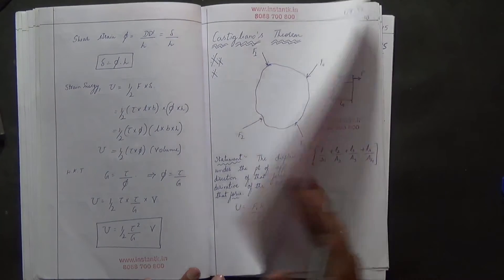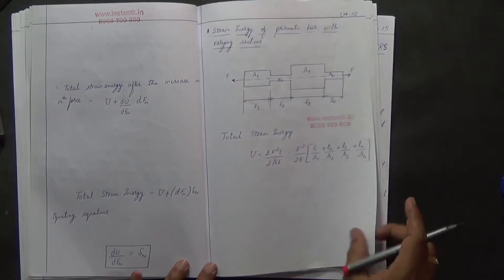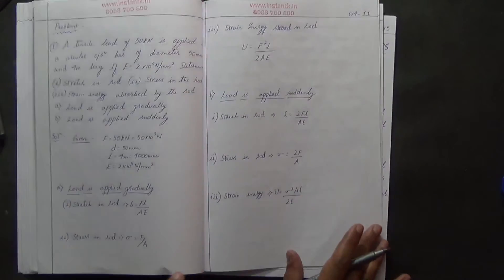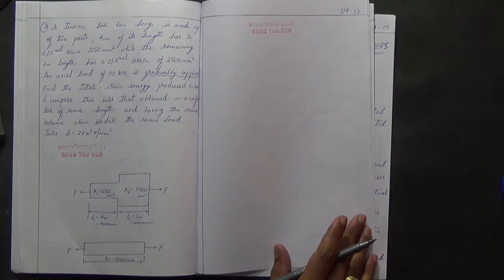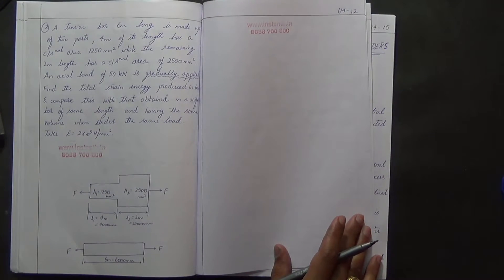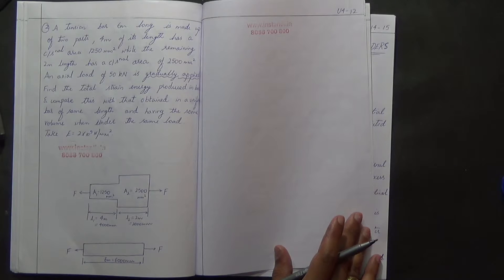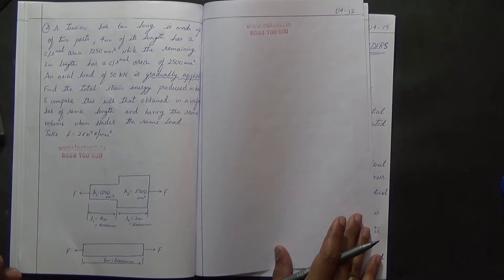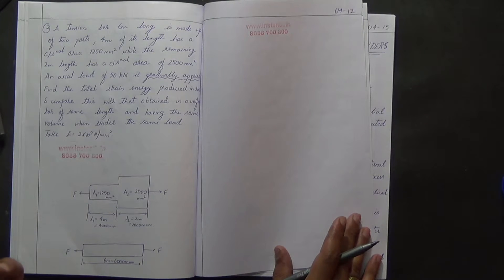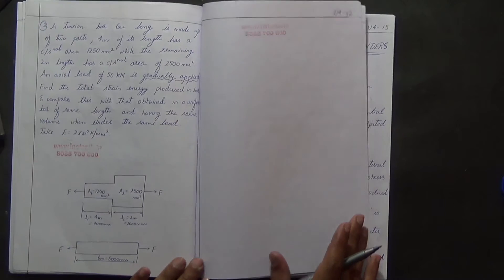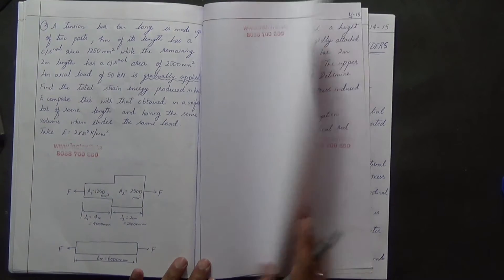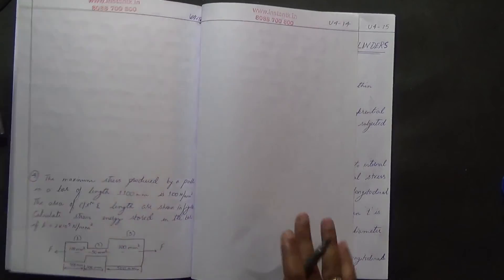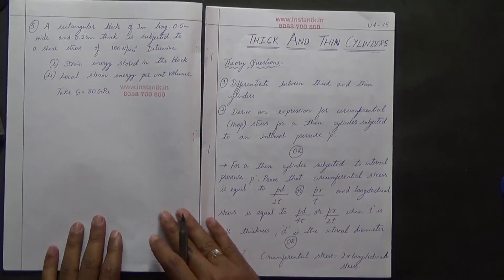Topics include Castigliano's theorems and strain energy of varying sections, followed by problems. For the first few problems, given data is written. Later, only the figure and problem statement are provided. You must write the given data on your own, start analyzing and thinking, and solve the problem yourself, or you can take support from the video lecture. This covers strain energy.